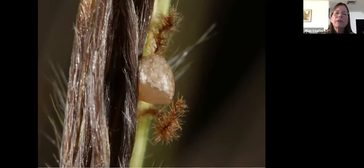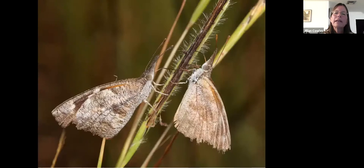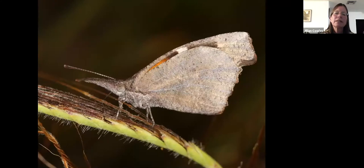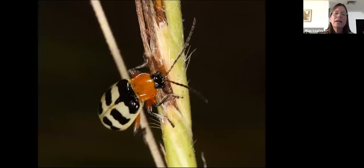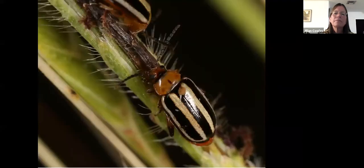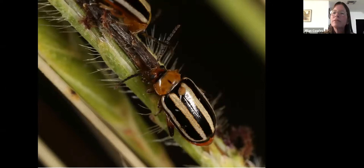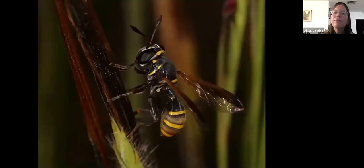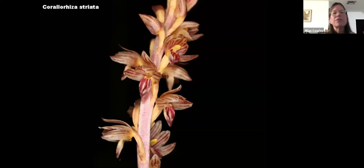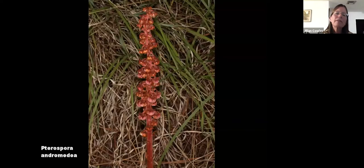In tanglehead grass, an ergot induces the grass to produce a sticky sweet substance — you can see bubbles trapped in it. Many insects will nectar on that sticky substance, including butterflies, lacewings, and beetles. As they go from plant to plant they disperse the spores of the ergot. So the ergot is employing the insects and the grass for its own reproduction — even flies are dispersing it.